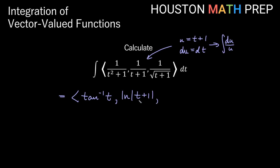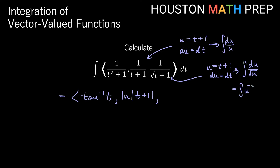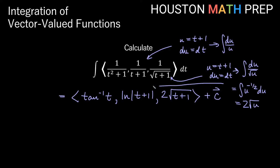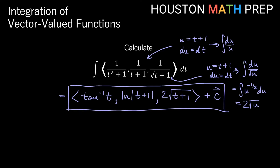If we're only considering positive t values, we might not need the absolute value. For the last component, we can do a u substitution with u equals t plus 1 and du equals dt. That gives us the integral of du over the square root of u, which is the integral of u to the negative 1 half du. Integrating gives u to the 1 half, and dividing by 1 half is like multiplying by 2, so we get 2 times the square root of u, which ends up being 2 square root of t plus 1. That's our vector, and then we add all of our constants in one constant vector.